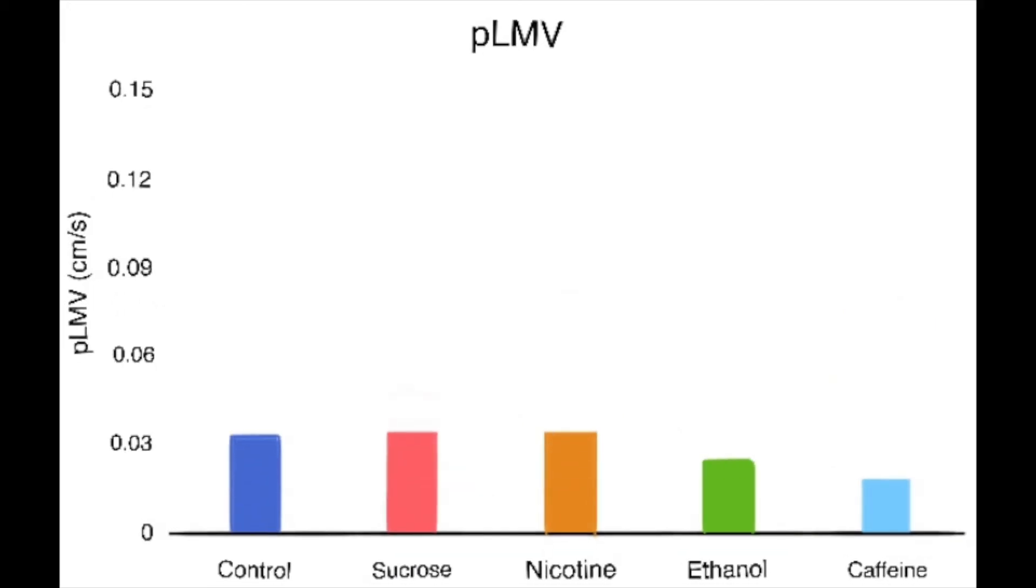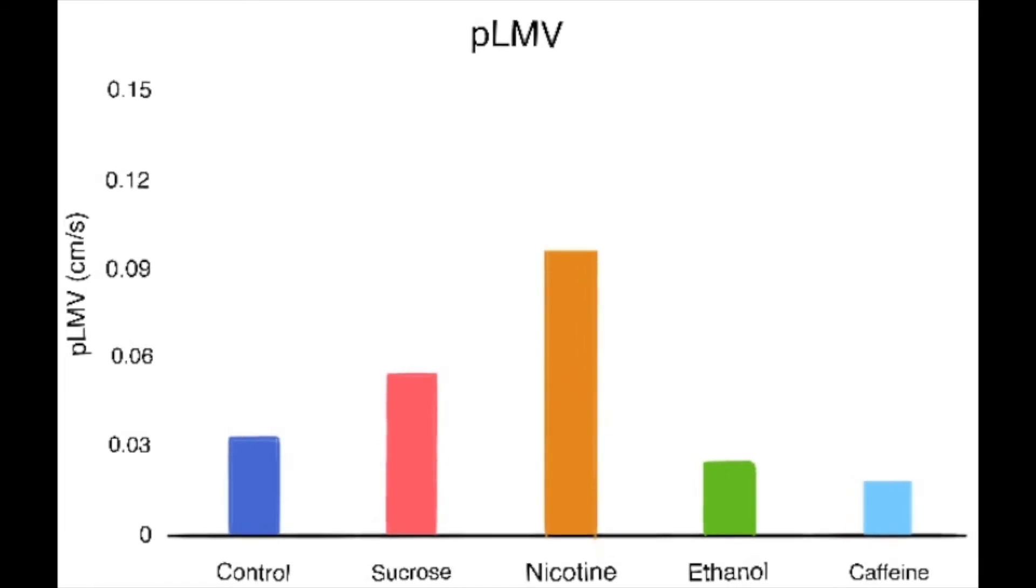For our measure of PLMV, the sucrose and the nicotine produced significantly higher values of movement in comparison with controls. No other values were shown to be significant.